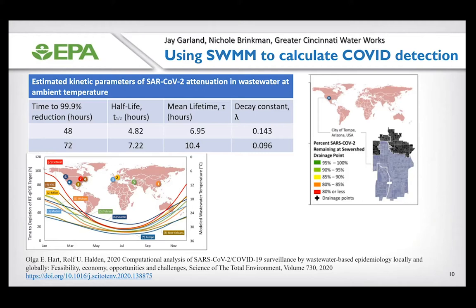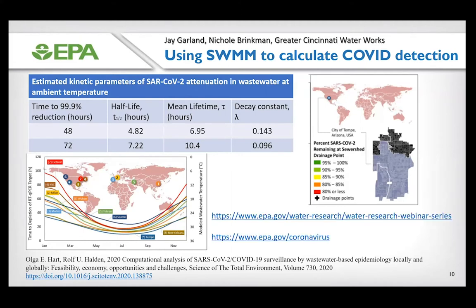EPA colleagues Jay Garland and Nicole Brookman are working with Greater Cincinnati Waterworks to look at COVID-19 detection in Cincinnati. I invite you to go to their webinar series to see their up-to-date work. I've also been in contact with Marcus Quickley at Colorado State University and others looking at COVID detection throughout the country. SWMM is very useful here because it can come up with flow rates, retention times, dilution factors, and other parameters that make it easier to detect COVID-19.